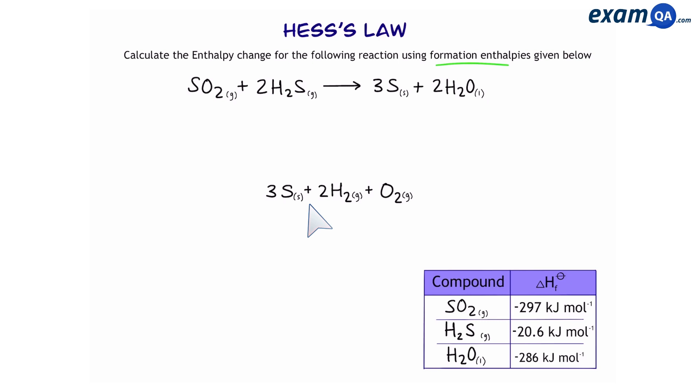So we have sulfur, oxygen and hydrogen. Make sure to balance the elements to reflect the reaction above. Now, let's start making our cycle. We point upwards from elements to reactants and to products.